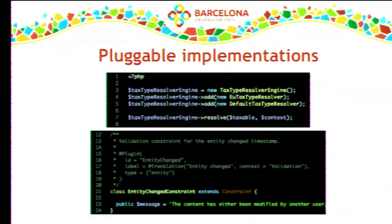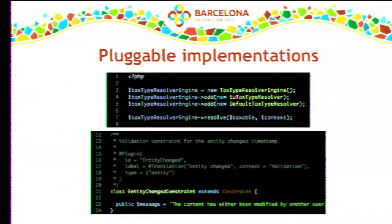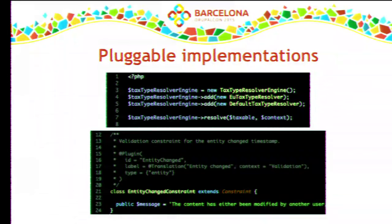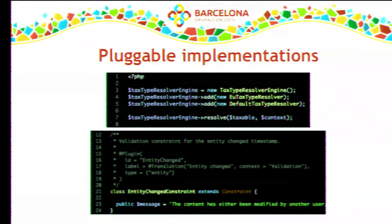The second problem is pluggable implementations. Tax types are resolved by calling resolvers until one gives us the answer — the one for France, one for the EU, one for the US. The main class that does this invoking does not care where the resolvers came from. The library doesn't care about discovery — that's the job of the parent system. Both Symfony and Drupal 8 have the concept of tagged services. In your services YAML file you add all of the resolvers, give them a tag, and the container gets all of those services and passes them to the central class.